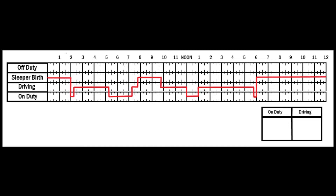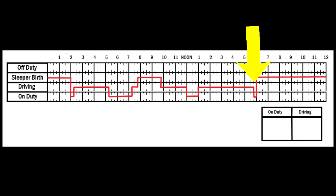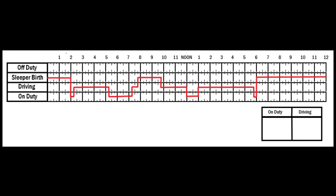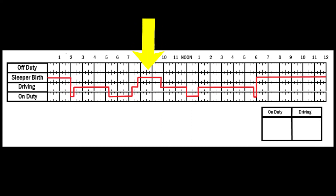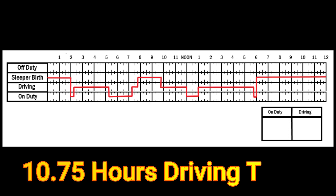Drop back down to driving, drive two hours and 15 minutes to where you're getting reloaded, drop down to on-duty — and they're fast, so you're out of there in an hour. Back up to driving, drive four hours and 45 minutes, drop down, do your 15-minute post-trip inspection on-duty, and go back up into the sleeper berth. At this point you've used up pretty much all your hours for the day — that would be 16 hours on-duty, because when you went into the sleeper berth you stopped your 14-hour clock.